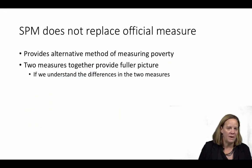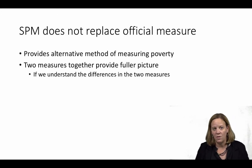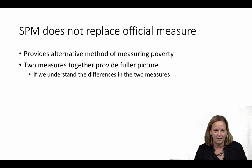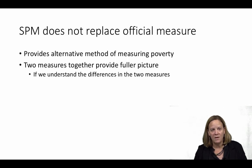The official poverty measure, with all of its flaws, will remain the foundation of official U.S. poverty statistics for now. The SPM, however, does provide an alternative measure that can help give a more accurate and complete picture of poverty in the United States. If we understand the differences between the two and the reasons for them, both of these measures can be used to develop a better understanding of poverty in the U.S. and how it changes over time and across groups.